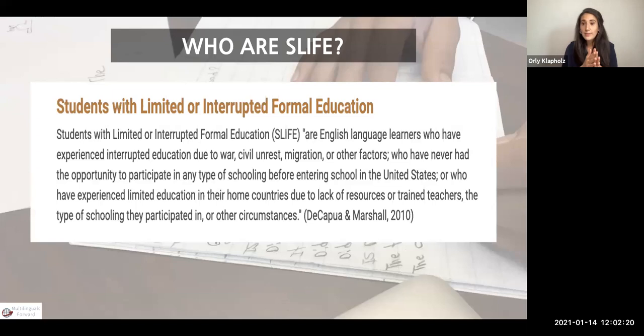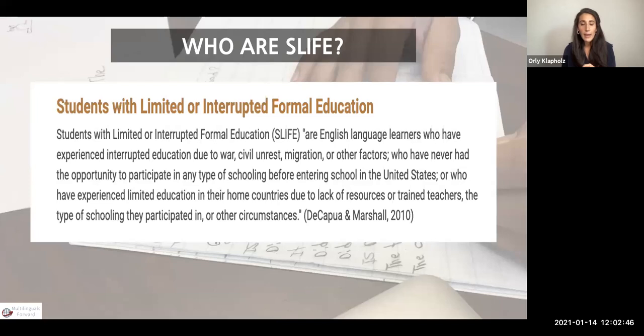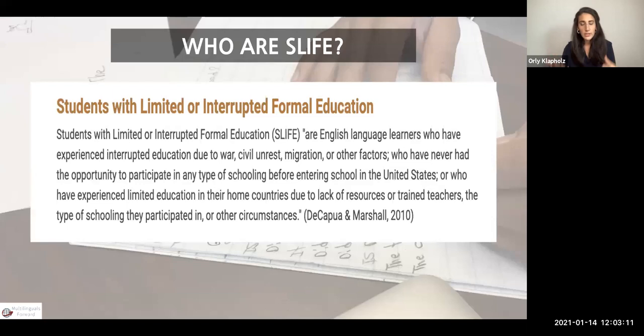Before we do that, I want to talk about who SLIF are — students with limited or interrupted formal education. Most states do not disaggregate data for SLIF, so it's hard to know exact numbers. States also have different definitions. I chose the definition by DiCapua and Marshall because it's the broadest — generally English learners who could have any interrupted experience within their educational system or some limitations. For example, a student who goes to school every day but a teacher doesn't show up most of the time would also be considered SLIF.